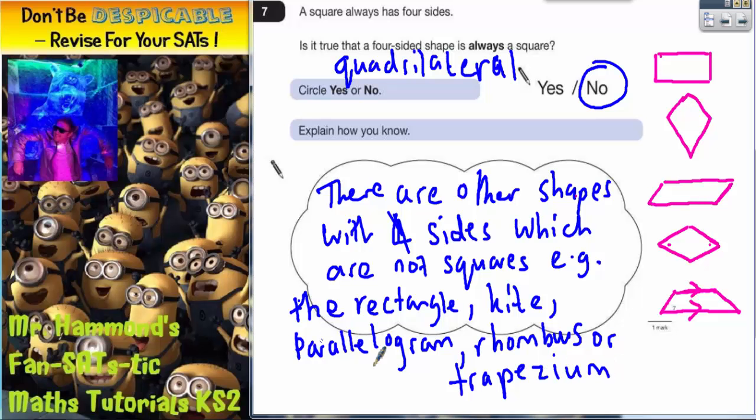You don't actually have to write all of those shapes down. You only really need to say one. Because by seeing one shape which has four sides but isn't a square, you are proving that this statement is wrong. But the answer is no. And there's your explanation.